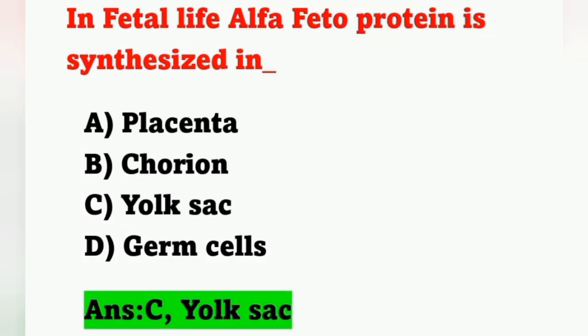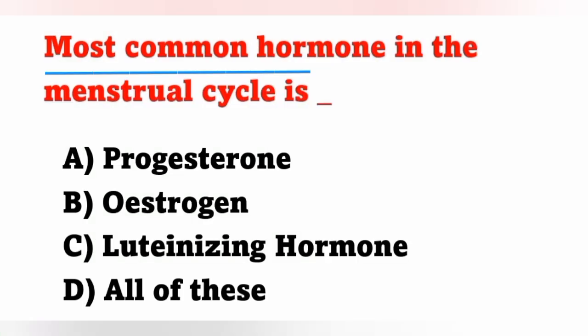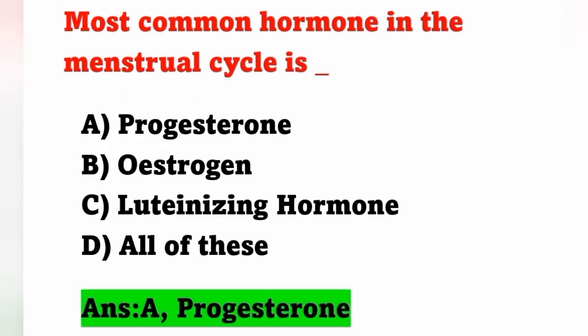The next question: the most common hormone in the menstrual cycle. Options — A: progesterone, B: estrogen, C: luteinizing hormone, D: all of these. Luteinizing hormone, follicle-stimulating hormone, progesterone, and estrogen are all involved in the menstrual cycle, but the most common hormone is progesterone — option A is the correct answer.